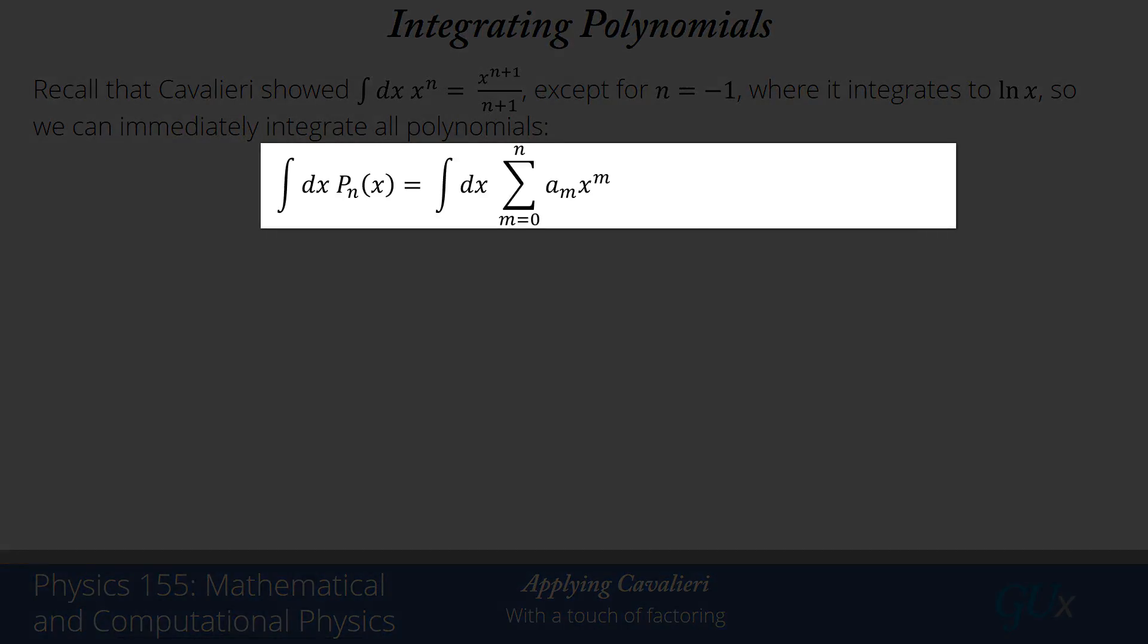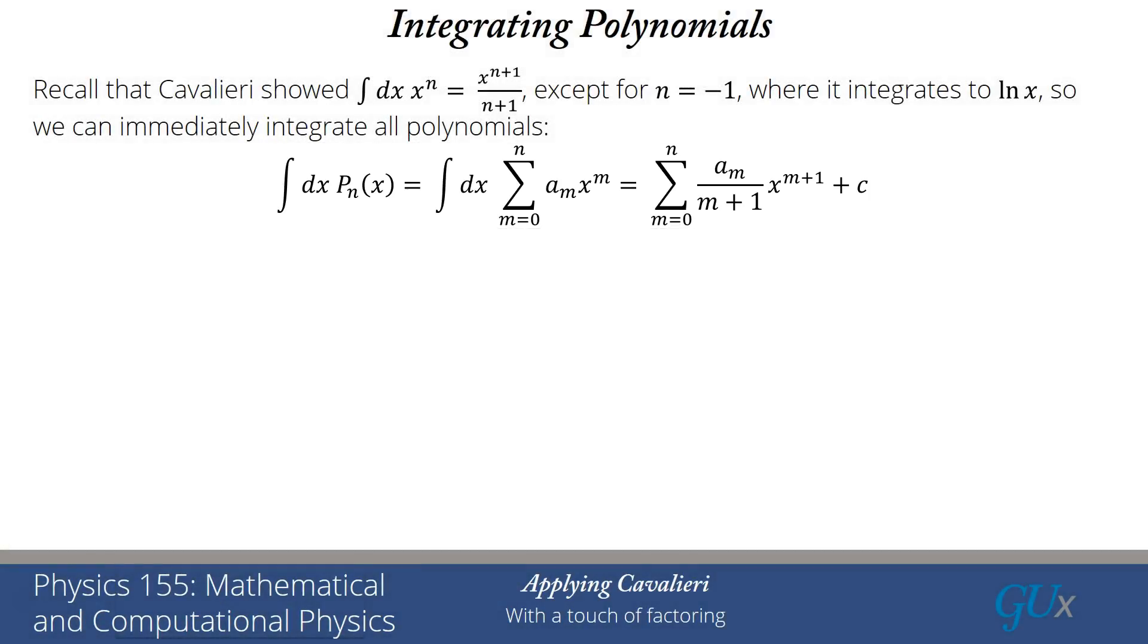If I have a polynomial of degree n, P_n(x), it's got a power series expansion from m=0 up to n with some numerical coefficients a_m multiplied by x^m. I just pull that summation outside the integral, which I can do because it's a finite sum, and I just integrate the power. I get the final result: sum from m=0 to n of a_m/(m+1) x^(m+1) plus some arbitrary constant because this is an antiderivative that we're evaluating.